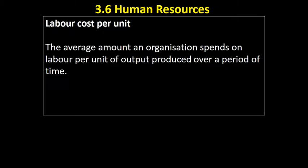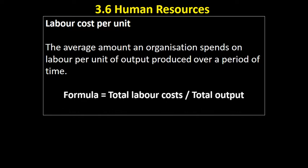Labour cost per unit is the average amount an organisation spends on labour per unit of output produced over a period of time. So in other words, what you do is you work out your total labour costs and you divide that by total output, and what that tells you is how much each unit cost you on average in terms of labour to produce.